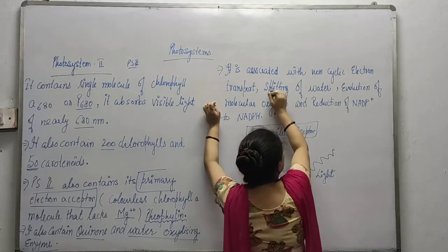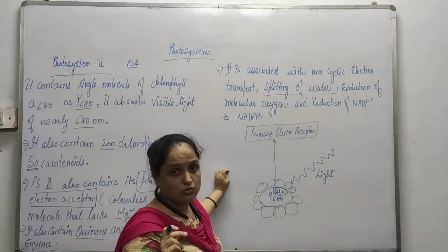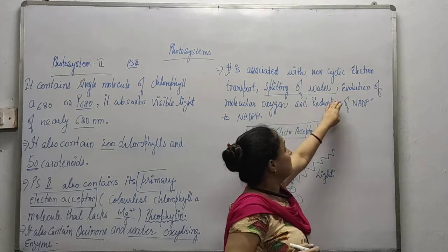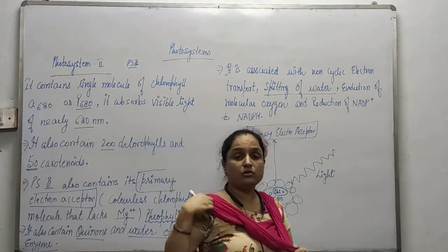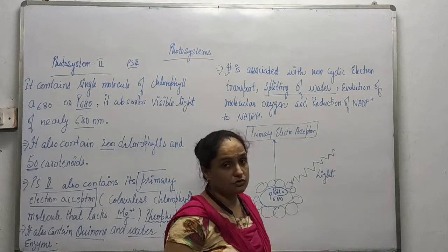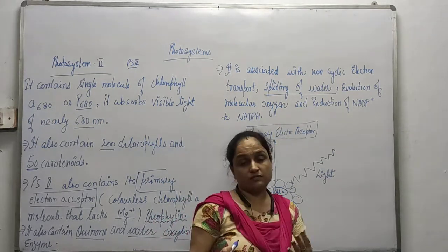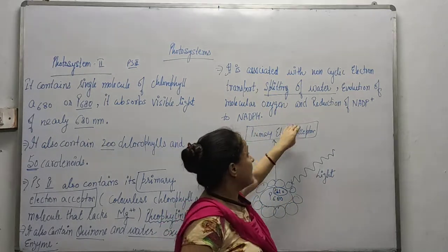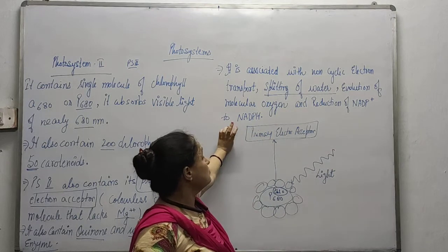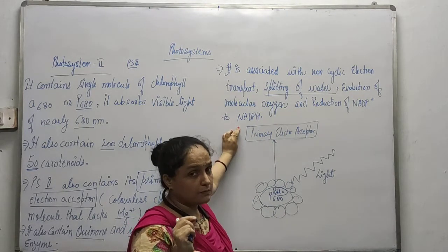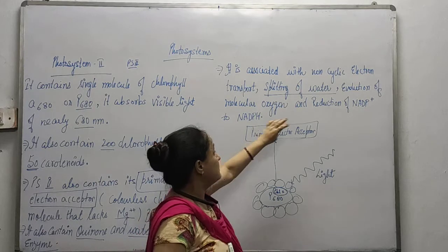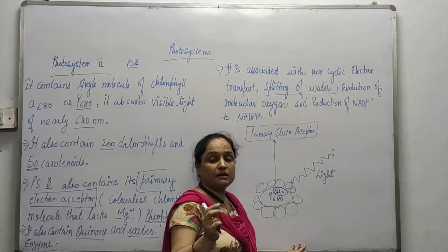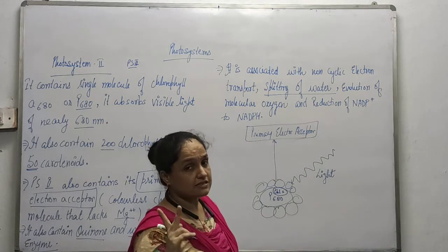The key processes occurring in pigment system 2 include: splitting of water — H2O breaks down into hydrogen ions and hydroxide ions — evolution of molecular oxygen, which is produced and released into the atmosphere through this pigment system, and reduction of NADP to NADPH.